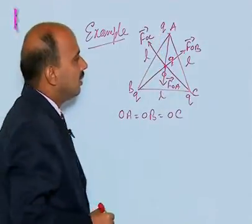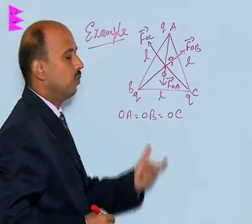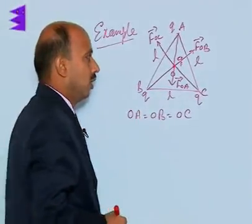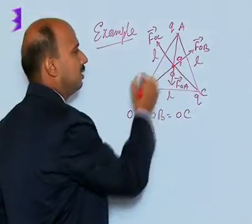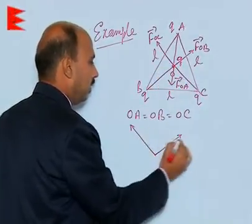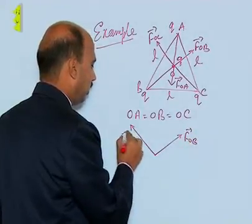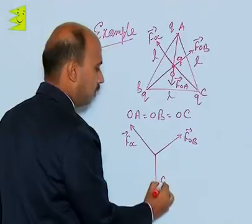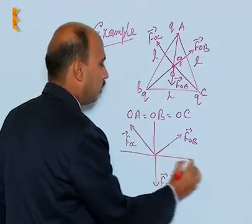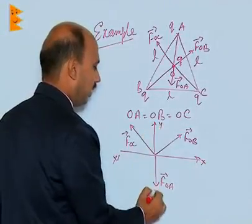So there are three forces here, FOA, FOB and FOC. Now we have to calculate the net force. So we can take here, I am making this diagram in here, in this way. Here I am taking FOB, here FOC and here is FOA, suppose this is here taken X and Y axis, X dash and here Y, Y dash.